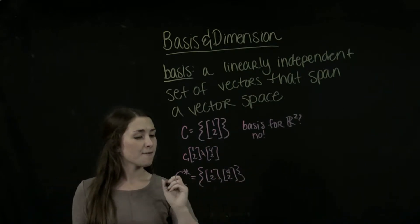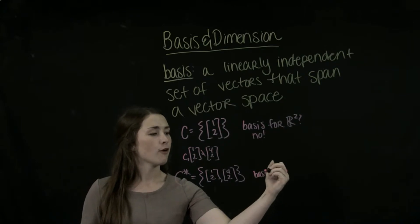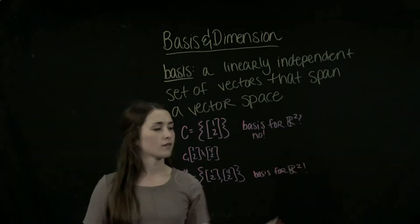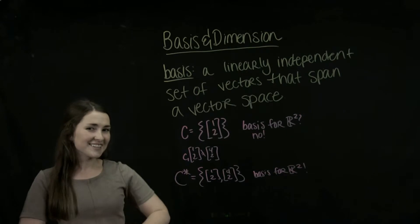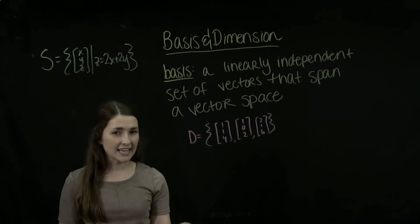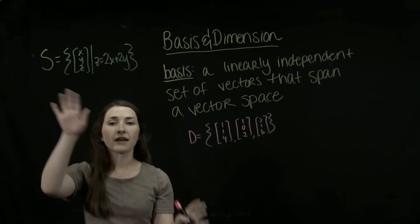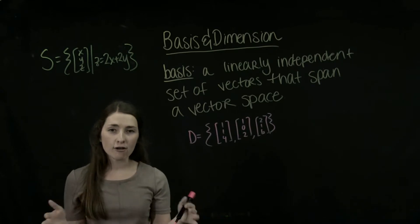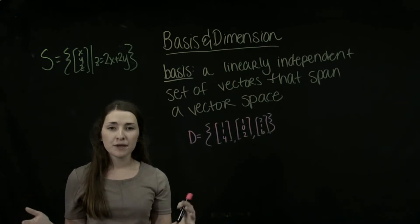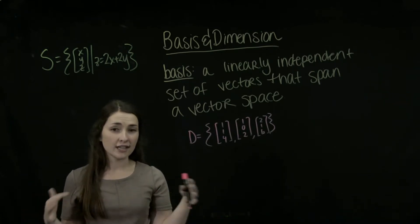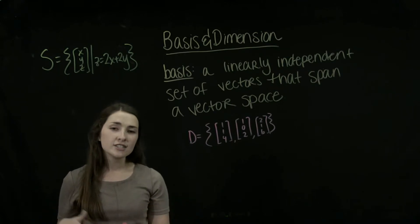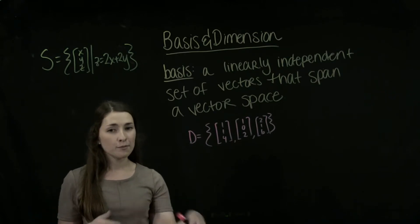So C star is a basis for R2. So now let's look at another example. Let's look at this set D and see if it spans our subspace of R3 up here. And our subspace is going to be the set of vectors in R3, XY and Z, such that Z is equal to 2X plus 2Y.